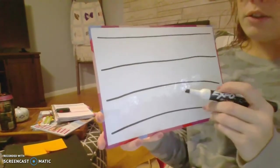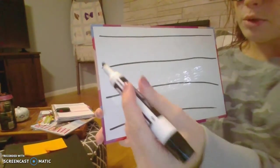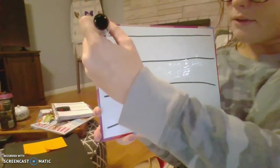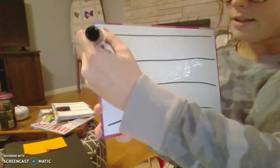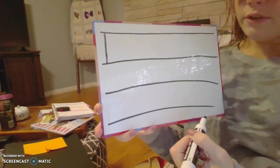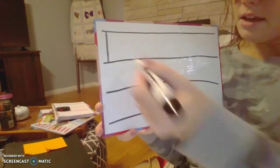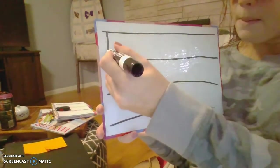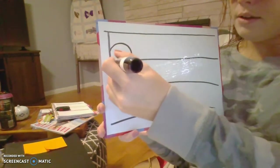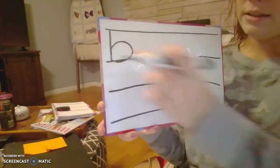If we are writing the letter B, you're going to take your pencil, marker, whatever you're writing with. You're going to start at the top of the line and make a straight stick down. The first step is to make a straight line or a stick, and then we're going to give it a big curve or a big belly all the way down to the bottom of the line and connect it back to the stick.